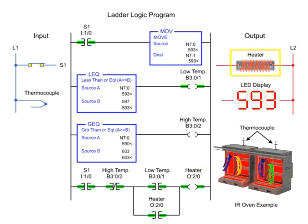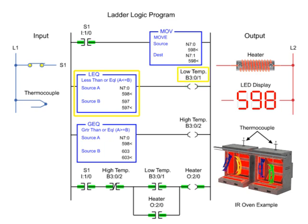The heater remains on as long as the low temp output is true and the high temp output is false. As the temperature rises above source B of the less-than-or-equal-to instruction, low temp turns off and heating continues.